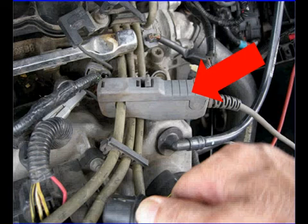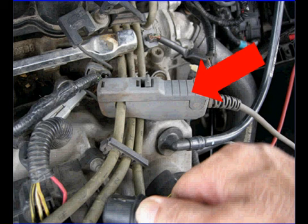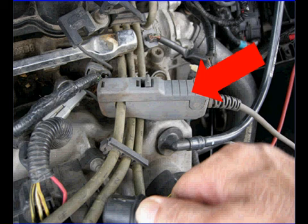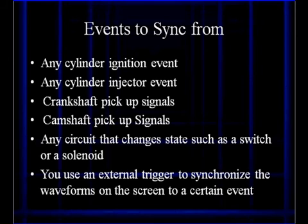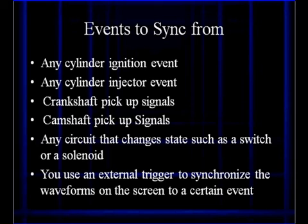So there are always ways to get this triggered. Here's our example of our number one trigger: we've connected around this plug wire, which happens to be number one. Now the events, if we select this as a trigger, will be tied to number one cylinder — that is an evenly spaced signal. We can sync from any cylinder event, any cylinder injector, evenly spaced crankshaft pickup signals, evenly spaced camshaft signals, and circuits that change states such as a switch or solenoid. You can always use an external signal to synchronize things into an event related to a particular thing, like engine speed or rotation.